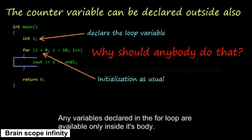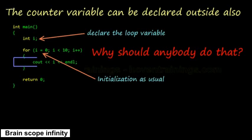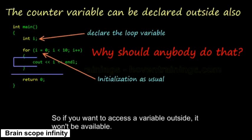Any variables declared in the for loop are available only inside its body. They are not available outside. So if you want to access a variable outside, it won't be available.